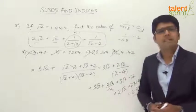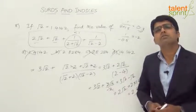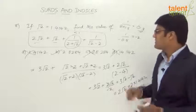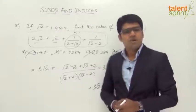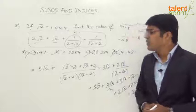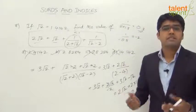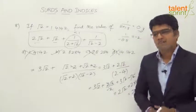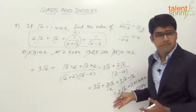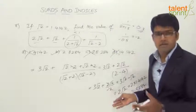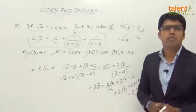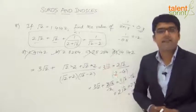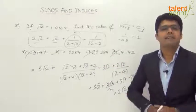Depending on various factors, we can use the approximation method and arrive at the correct answer. Since we got approximately 2.8, option B (2.8284) is the best possible answer. Either go by the regular simplification method, which is not difficult, or follow the approximation approach based on these conditions to arrive at the right answer.